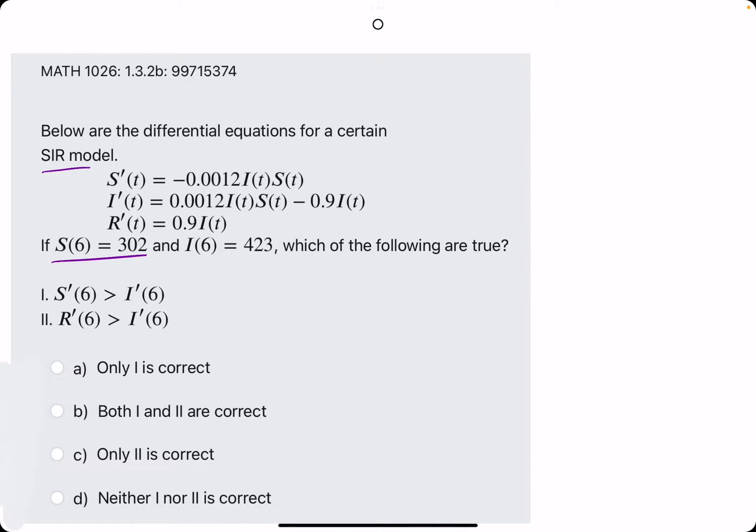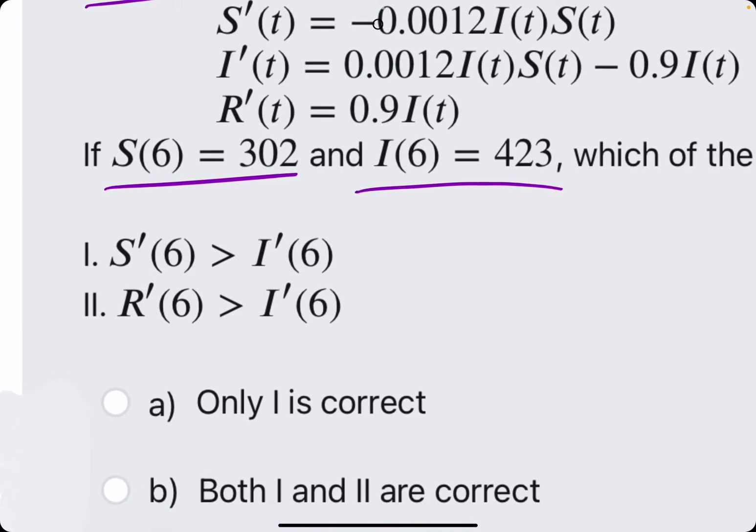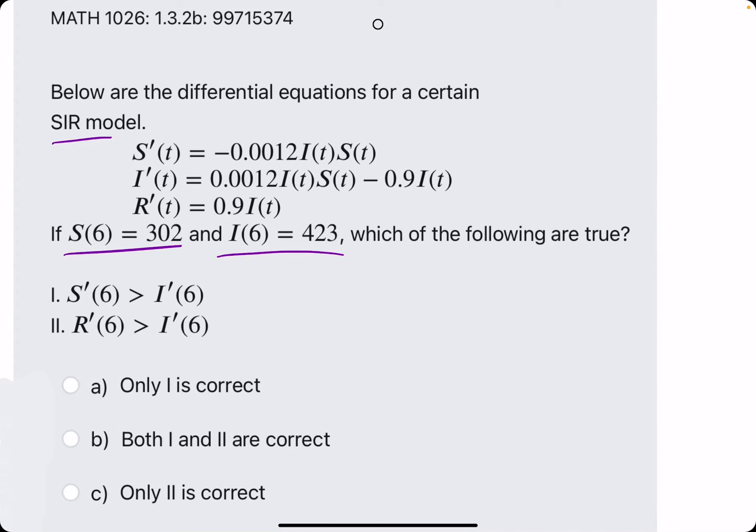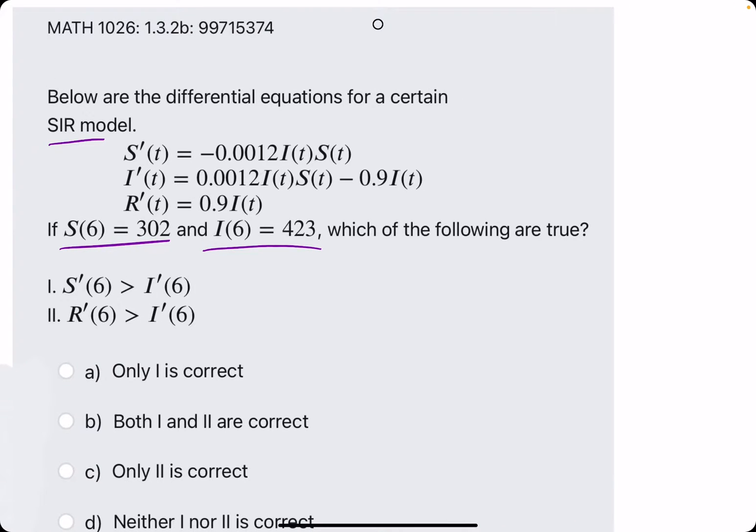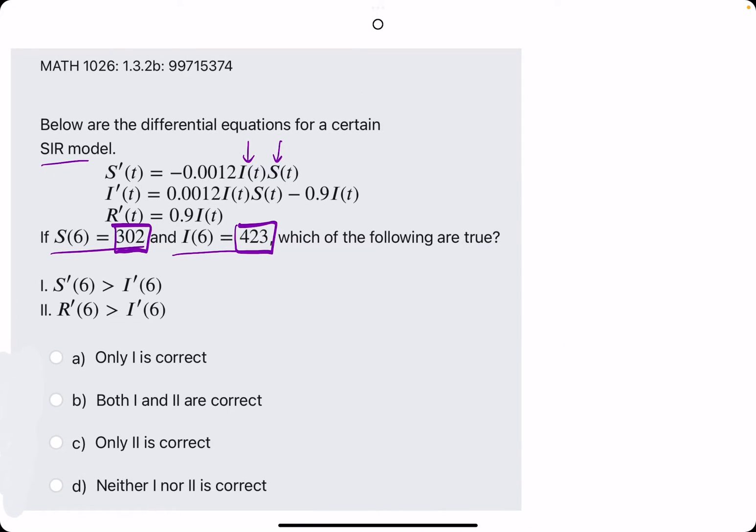Here we are given an S value and an I value at time 6, and they're asking which of these statements are correct regarding S prime, I prime, and R prime, all at 6. So basically all we need to do is plug in this S value, 302, and plug in this I value, 423, into S and I respectively, wherever we see them in all three equations.